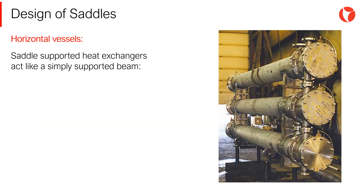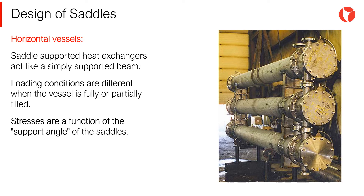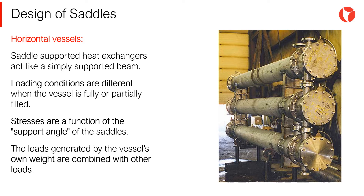A horizontal pressure vessel supported on saddles acts like a simply supported beam with the following considerations. Loading conditions are different when the vessel is fully or partially filled. Stresses are a function of the support angle of the saddles. The loads generated by the vessel's own weight are combined with other loads.